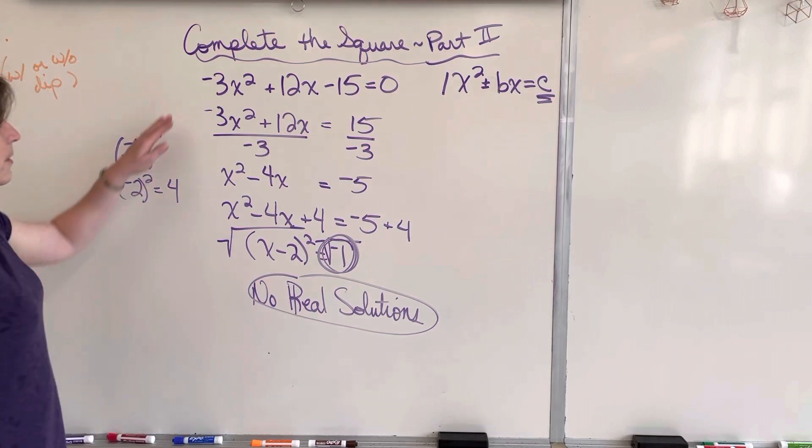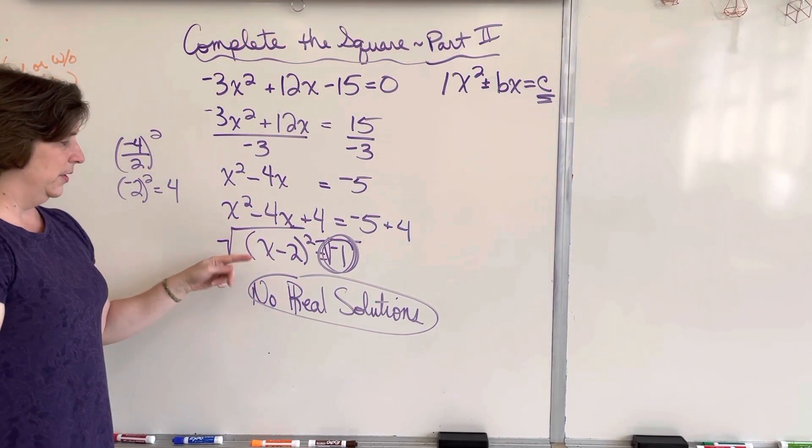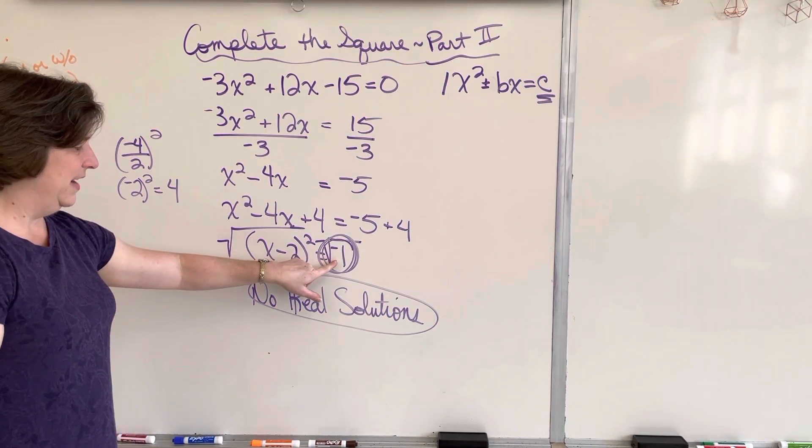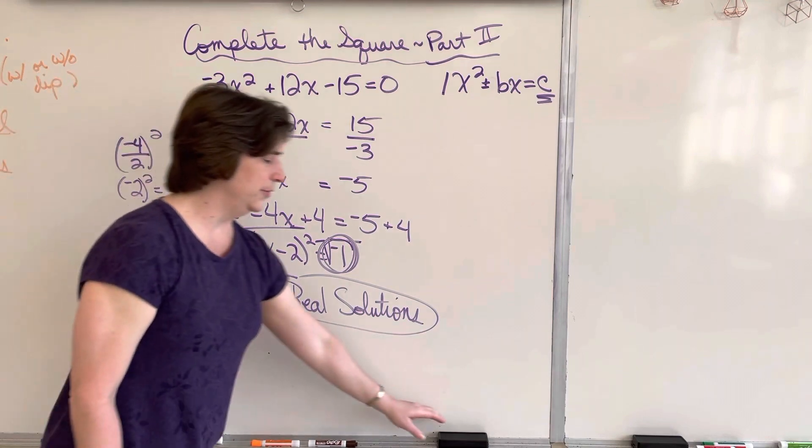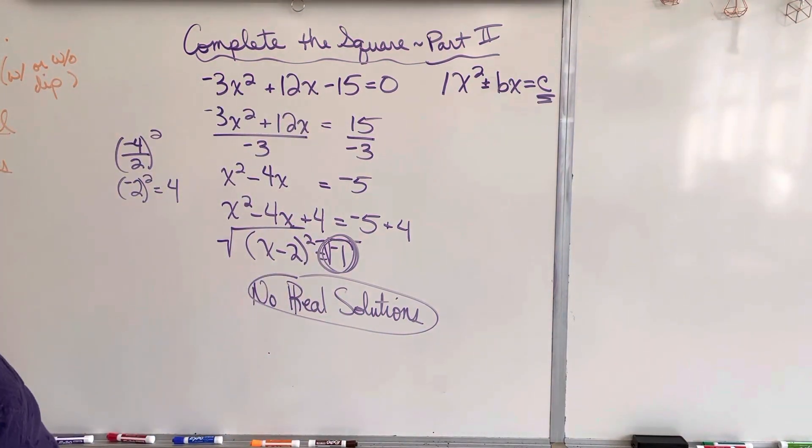So you always have to watch out now, once you have your perfect square trinomial, once you have your factorate, if it equals a negative number, you're going to have no real solutions because you can't take the square root of a negative number. That's problem 1.